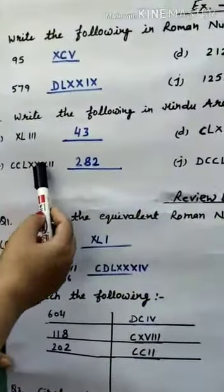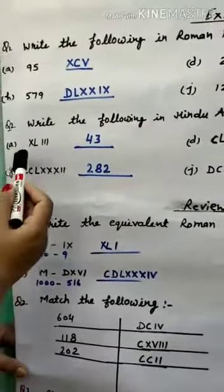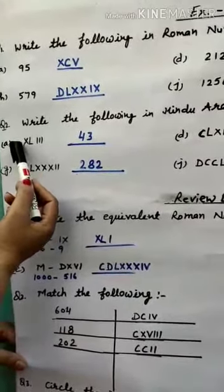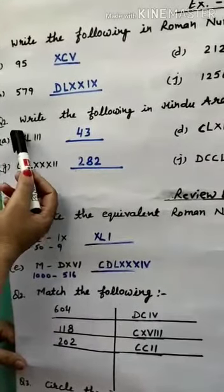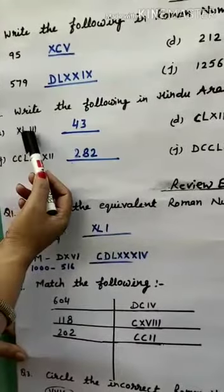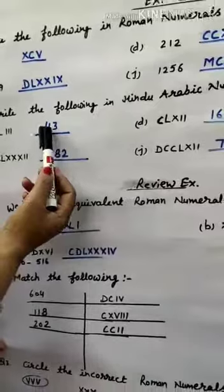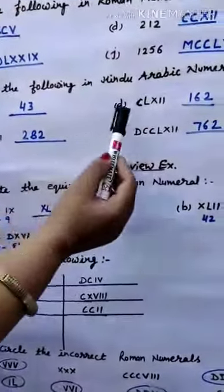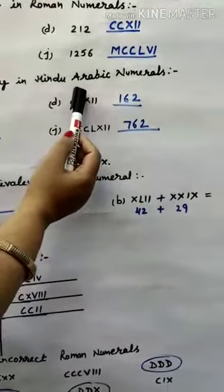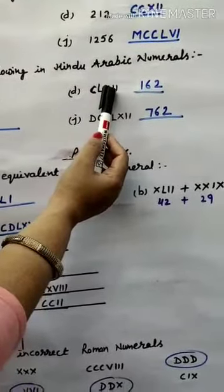Question 2: Write the following in Hindu-Arabic Numerals — similar to Exercise 1 but with larger numbers. For XL III: L means 50, X is on the left side so we subtract 10 from 50, giving 40, and III is 3, so the number is 43.